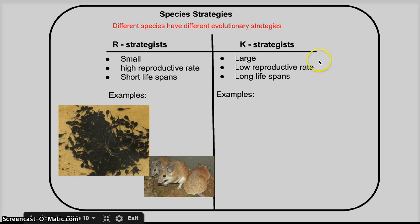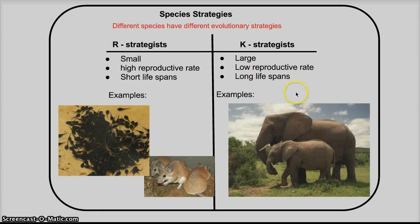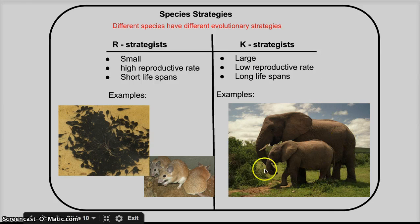Then you have K strategists. These guys tend to be large. They reproduce less often and fewer times over the course of their life. And they have longer lifespans. Because of this, they tend to care more for their offspring. It takes longer for them to be pregnant before they have offspring. And they care for those that they have.